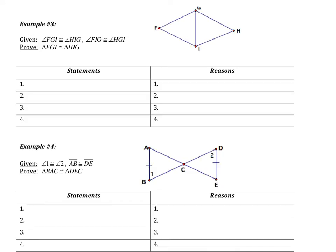Example three is our first proof. We are given some information and asked to prove the two triangles are congruent. The first thing I want to do is write down the givens. I know that angle FGI is congruent to angle HIG — that's a given. As soon as I write it in my proof, I want to mark it in my figure. FGI is this angle, and HIG is this angle.